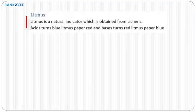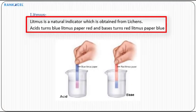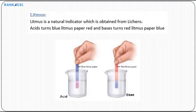Litmus is a natural indicator which is obtained from lichens. Acids turn blue litmus paper red, and bases turn red litmus paper blue.